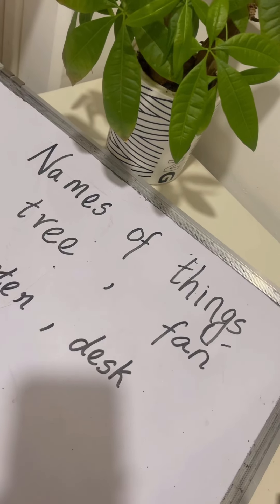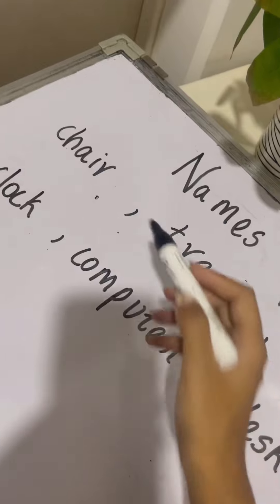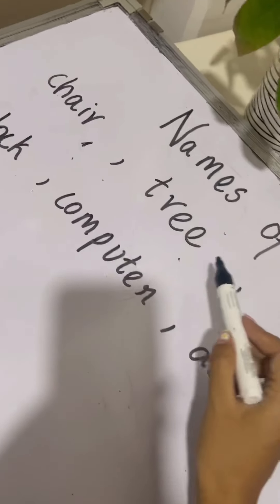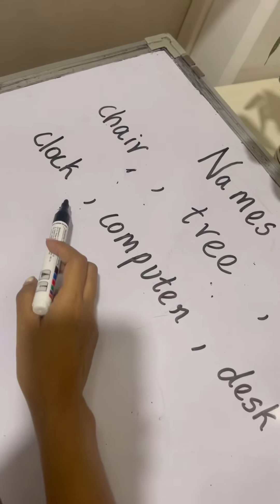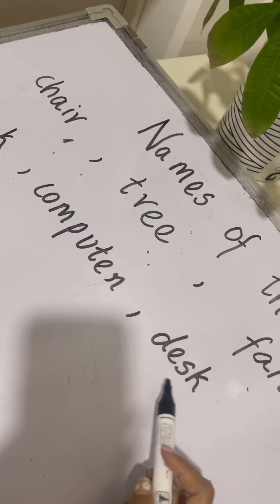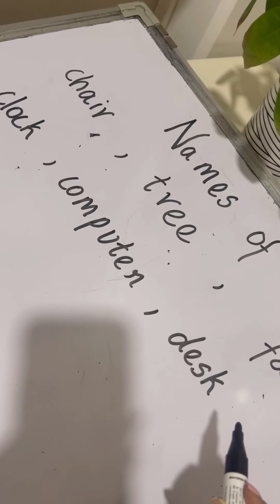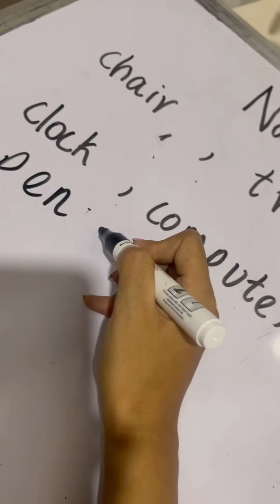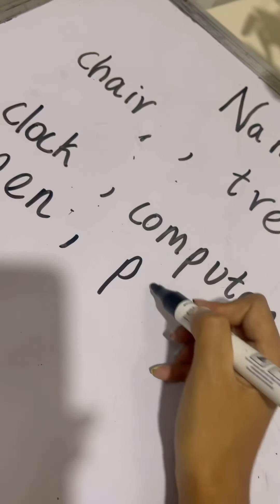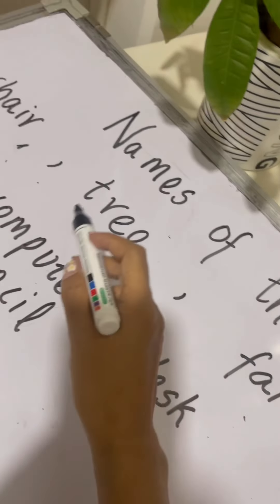Now, let us take a look at the names of things. You are sitting on a chair, isn't it? So, a chair is a name of a thing. Tree, fan, clock, computer, desk. These are all names of things. Can you tell me more names of things? Very good. Pen, pencil. These are all names of things.